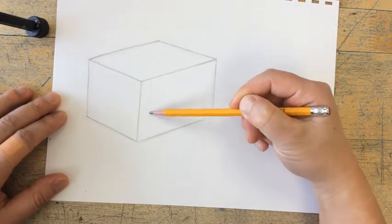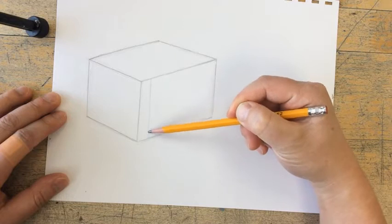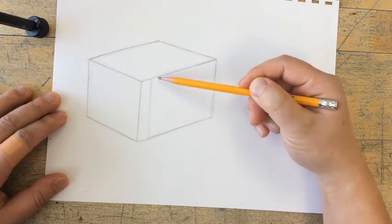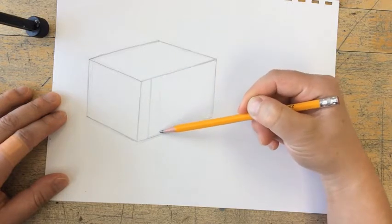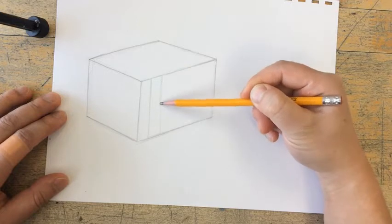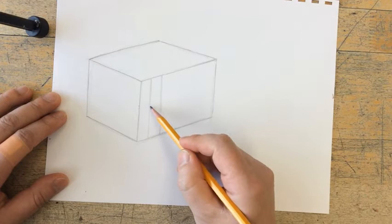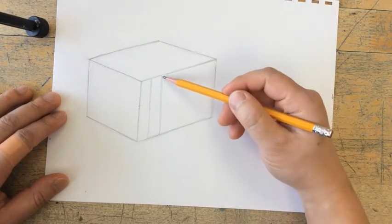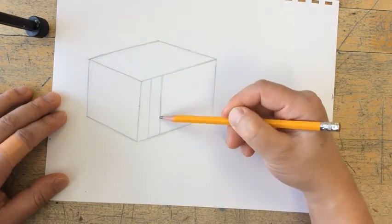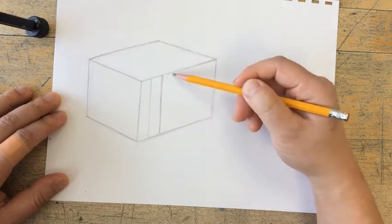Remember, cross contour lines are these imaginary lines that wrap around a form. Without color or value, you can still identify what the object is by understanding how these cross contour lines wrap around the object.